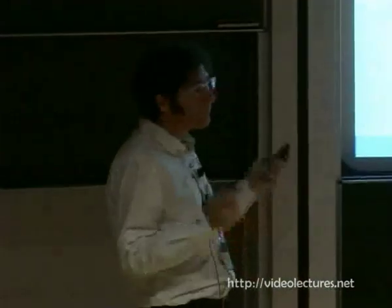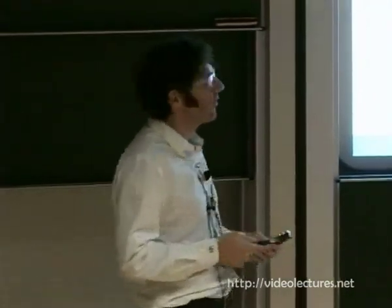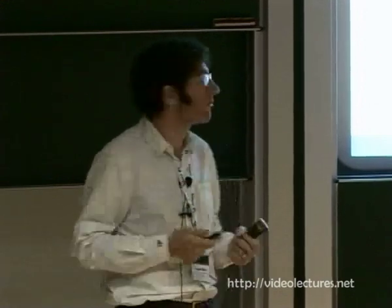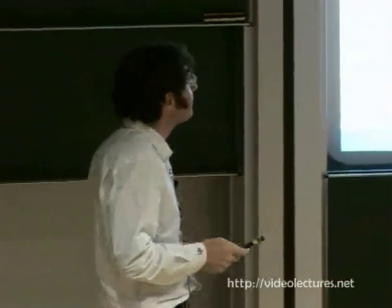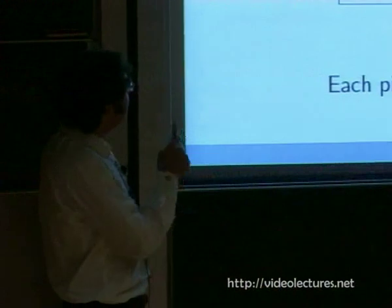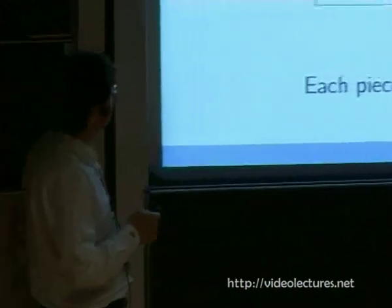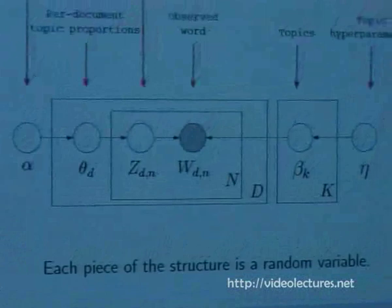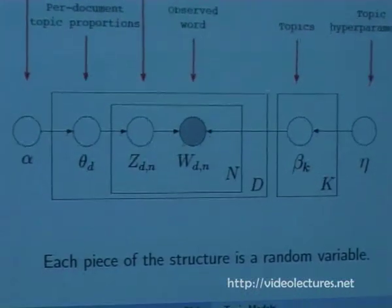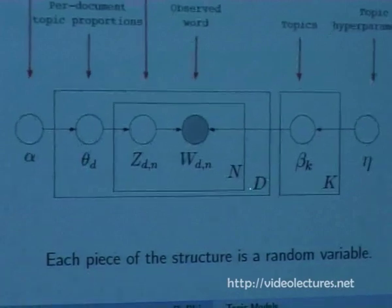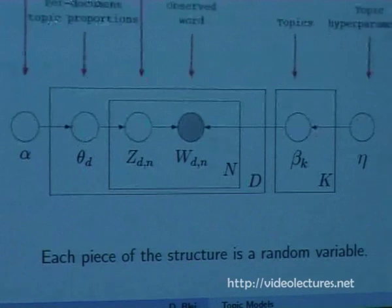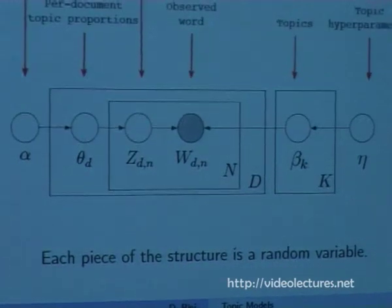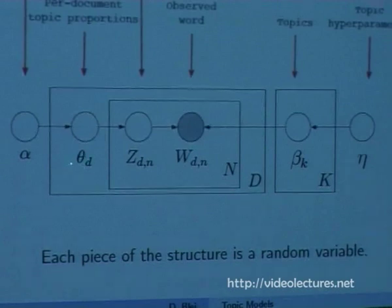The structure of this graph defines the pattern of conditional independencies encoded in the joint distribution, and also defines a factorization of the joint distribution. Here, the joint distribution of y and x1 through xn can be written as p(y) times the product from n=1 to N of p(xn | y). You can see that the x's are all conditionally independent given y. With this simple language in hand, we can write down the latent Dirichlet allocation model.